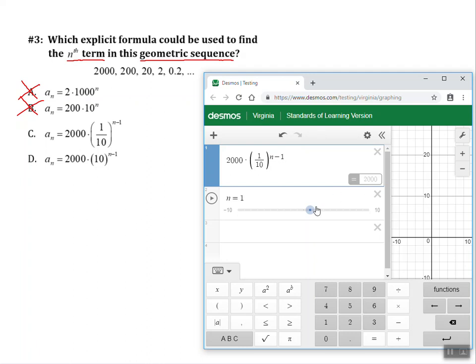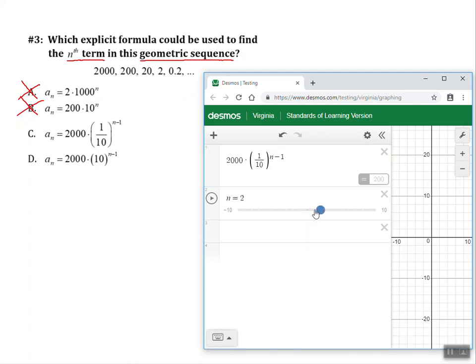I get my first term is 2000. When I slide to n is two, I get my second term is 200, which is correct. And when n is three, I get 20, and then when n is four, I get two. And it looks like we have the correct answer here. And that is it. Answer choice C is our answer.